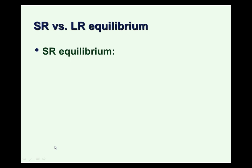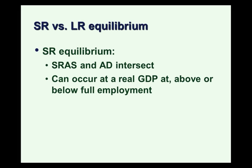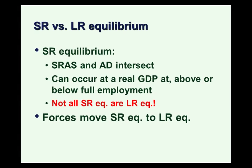A short run equilibrium may not look like that. Short run aggregate supply and aggregate demand intersect in a short run equilibrium; however, this can occur at the real GDP of full employment, or below or above it. So short run aggregate supply and aggregate demand intersect in a short run equilibrium, but not necessarily at the same point as the long run aggregate supply curve. Not all short run equilibria are long run equilibria.